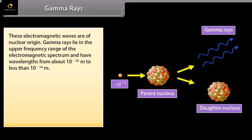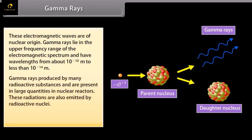Gamma rays. These electromagnetic waves are of nuclear origin. Gamma rays lie in the upper frequency range of the electromagnetic spectrum and have wavelengths from about 10 raised to the power minus 10 meter to less than 10 raised to the power minus 14 meter. Gamma rays are produced by many radioactive substances and are present in large quantities in nuclear reactors. These radiations are also emitted by radioactive nuclei. They are used in medicine to destroy cancer cells.